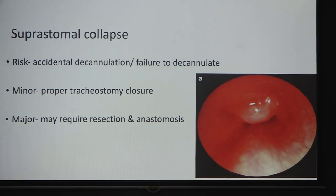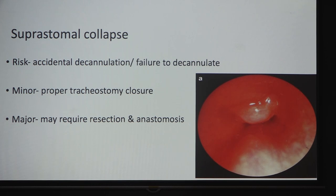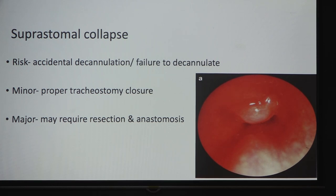Suprastomal collapse: whenever performing decannulation, always inspect the suprastomal area. If any granulations are present, remove them — ideally in the operation theatre. If required, the superior part may need to be sutured and hooked to the skin; major cases may require resection and anastomosis. Prevention is best; if it occurs, management depends on severity and should be handled in the OT.